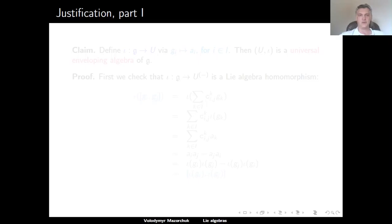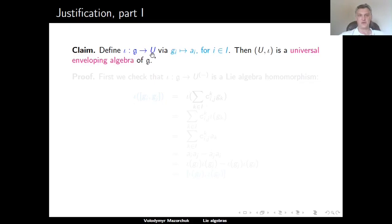It is now a good time to prove that the associative algebra U we have defined is a universal enveloping algebra for G. First, we define a linear map I from G to U by sending a basis element G_i of G to the generator A_i of U. This extends uniquely to a linear map from G to U because the G_i form a basis of our Lie algebra. The claim is that the pair (U, I) is a universal enveloping algebra of G. There are two things to prove: first, that I is a homomorphism of Lie algebras from G to the Lie algebra associated to U; and second, the universal property.